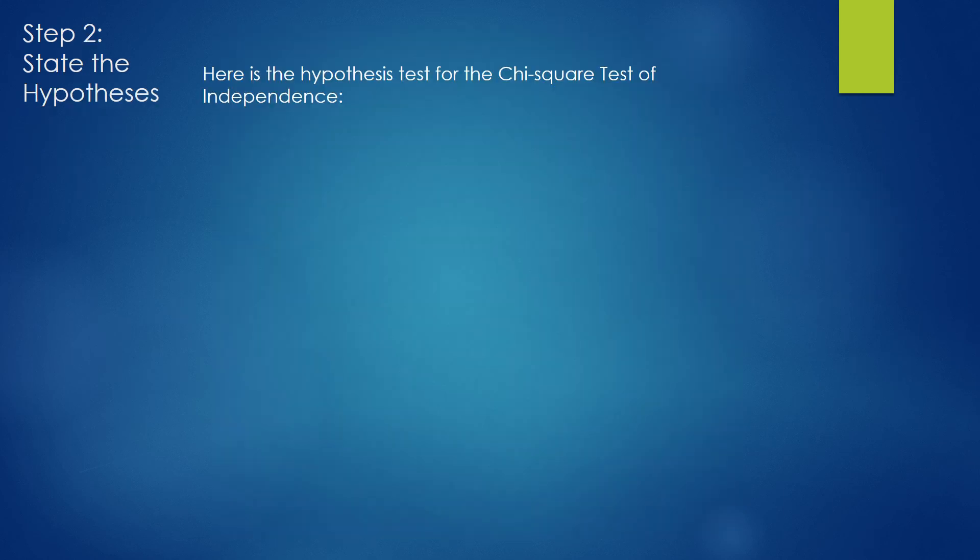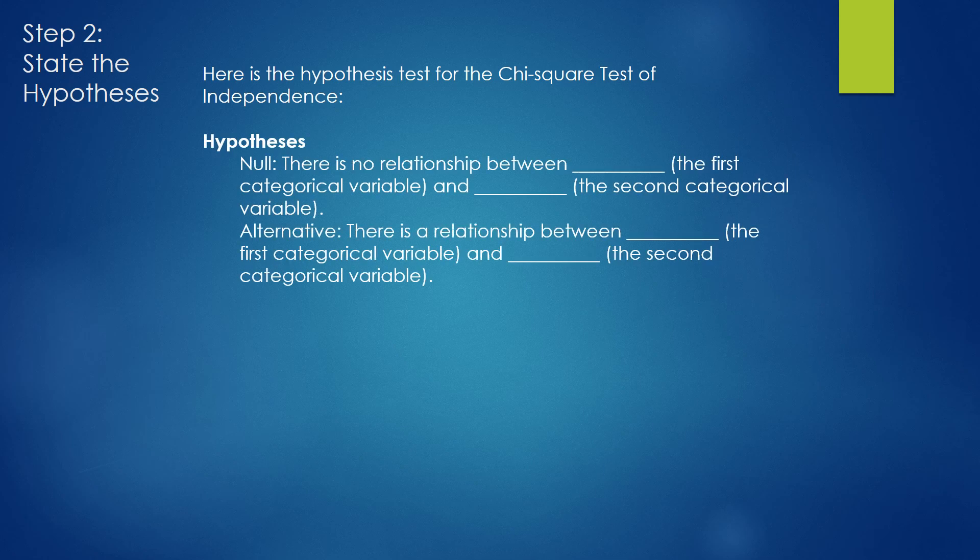It is important to clearly state the hypotheses. In order to do so, you have to know the format of the hypotheses for the Chi-Square Test of Independence. They appear like this. The null hypothesis states there is no relationship between two categorical variables. The alternative hypothesis says there is a relationship between two categorical variables.